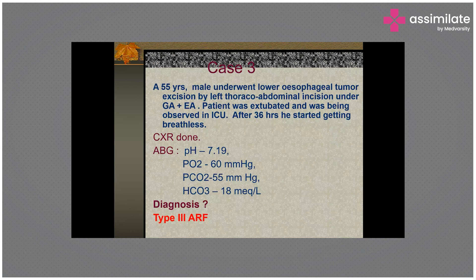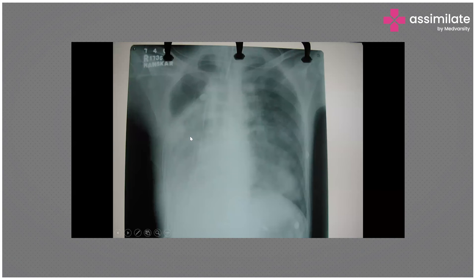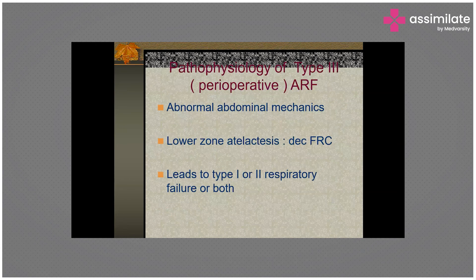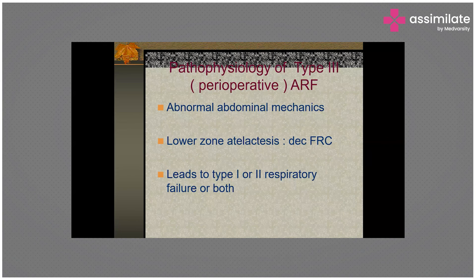This patient is in Type 3 respiratory failure due to atelectasis and unilateral pleural effusion. Type 3 respiratory failure results from abnormal respiratory mechanics — the chest wall compliance may be adequate, but the abdominal muscles exert pressure inside the thoracic cavity, especially in patients who have undergone abdominal or esophageal surgery, including gastric pull-through surgeries.